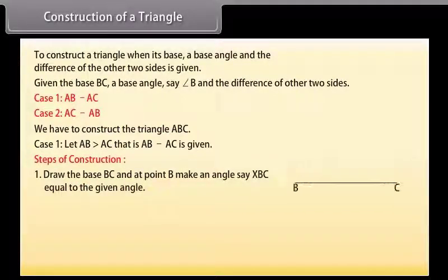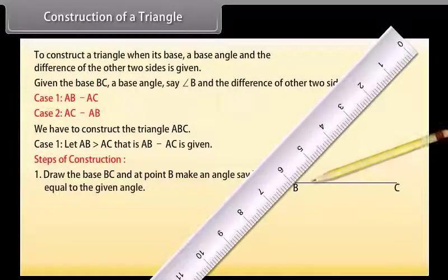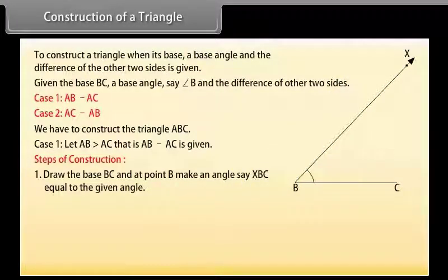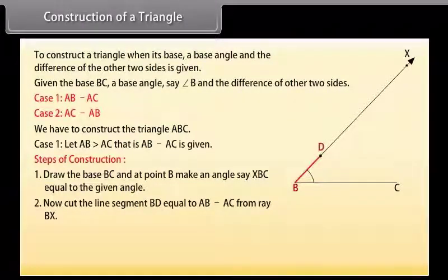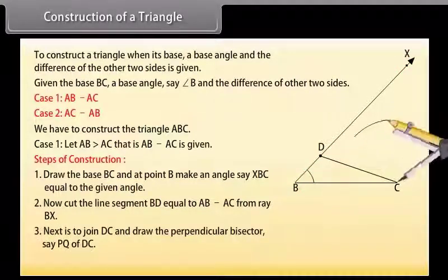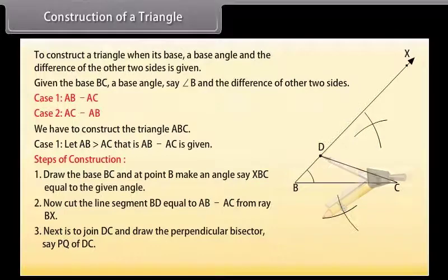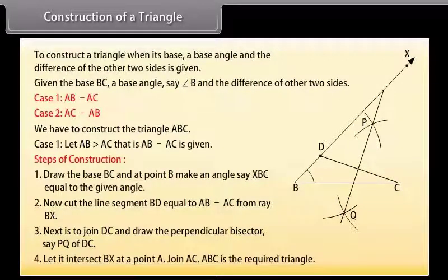First of all, draw the base BC and at point B make an angle XBC equal to the given angle. Now cut the line segment BD equal to AB minus AC from ray BX. Next, join DC and draw the perpendicular bisector PQ of DC. Let it intersect BX at point A. Join AC. Then ABC is the required triangle.